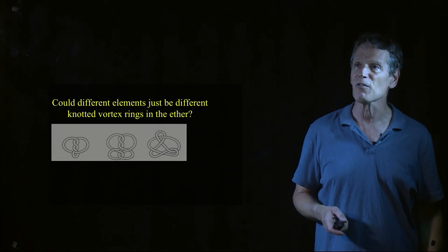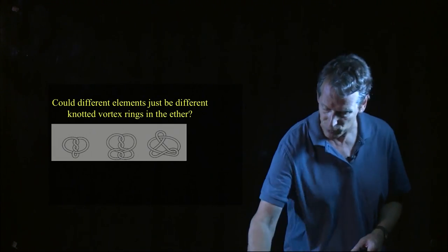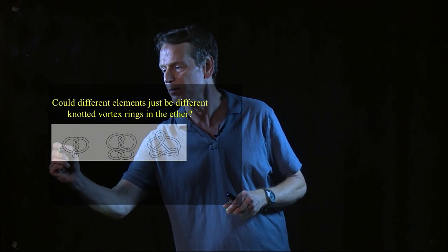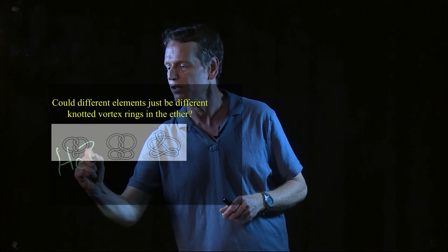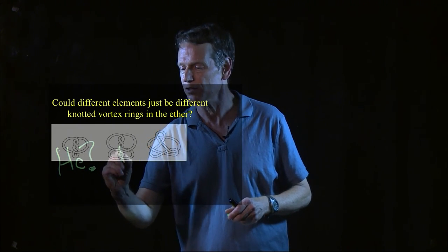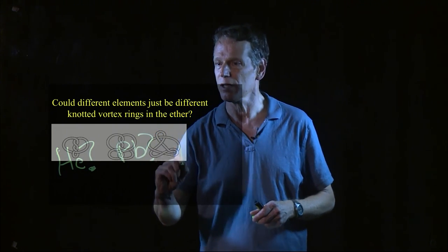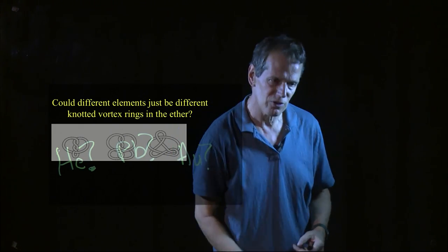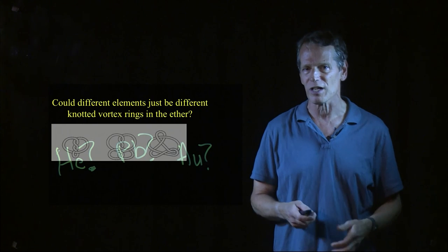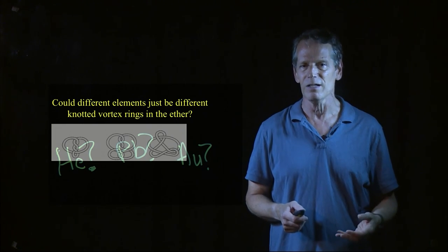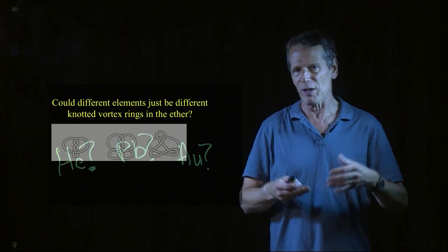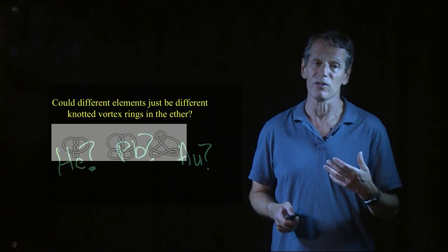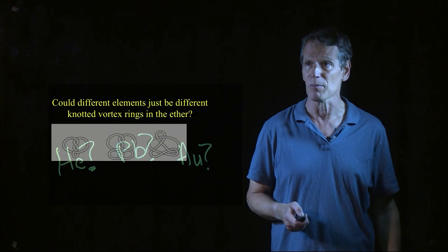And so the question became, here's a vortex ring that you have in the ether, and the question became, could different elements just be different knotted vortex rings in the ether? So for instance, I might have over here, I might have helium, that could be helium, and over here, this could be lead, and over here, this could be gold. And this theory of knotted vortex rings could actually explain why it was that we had all the elements that we had. And at the time, people were very excited about this. Lord Kelvin said this was the best theory of the atom that we had at that particular moment in time.